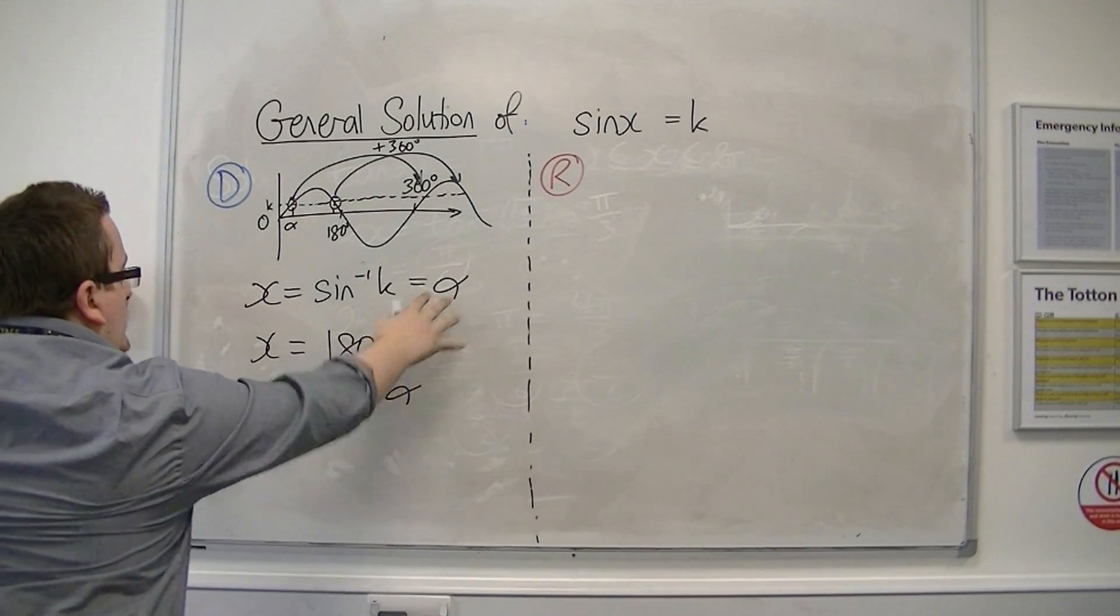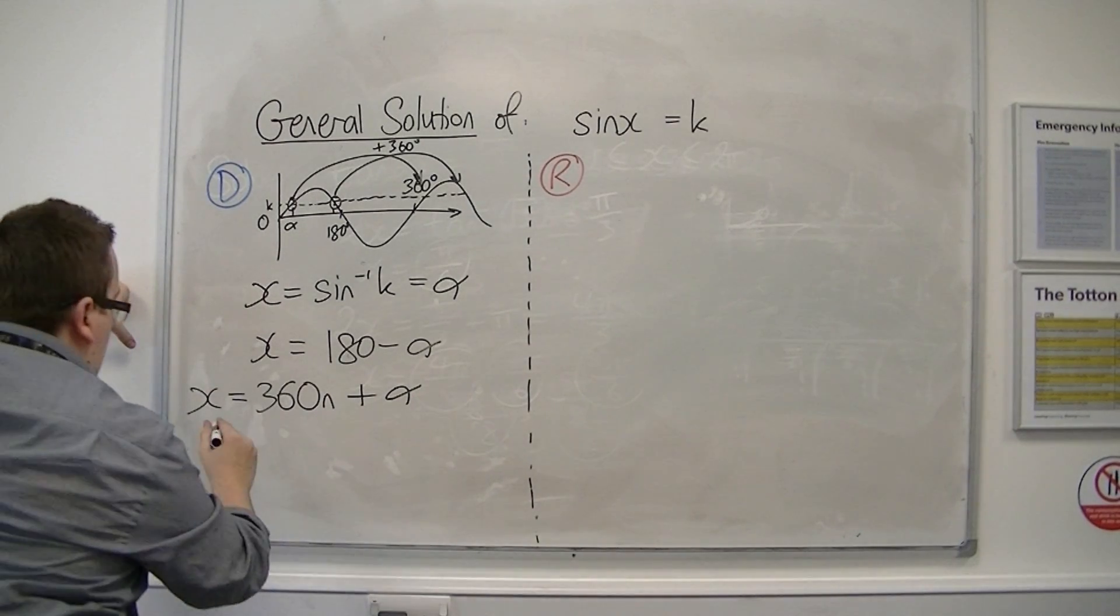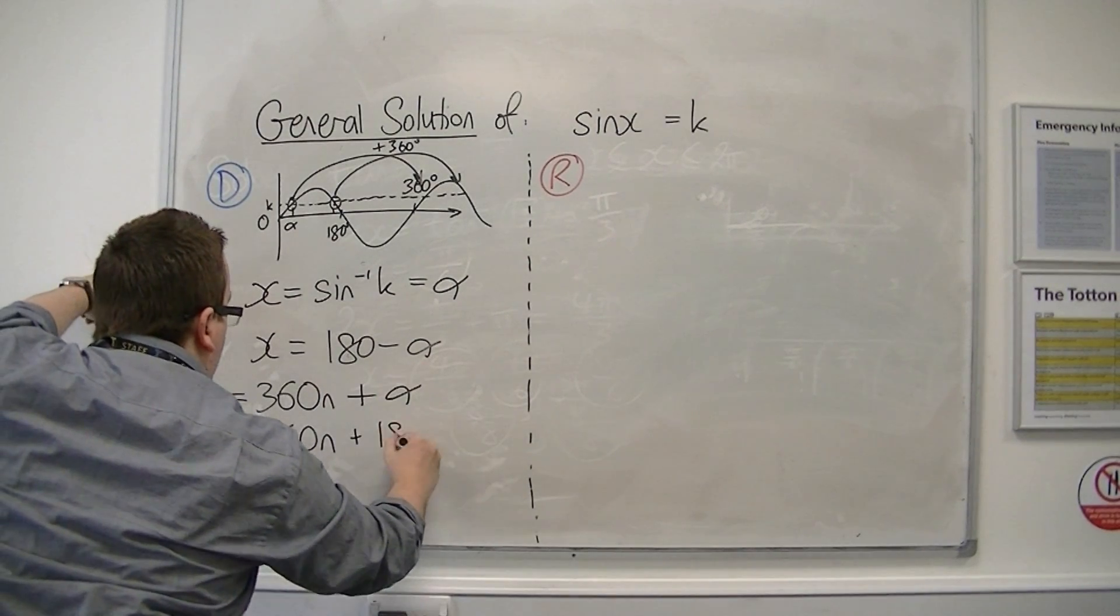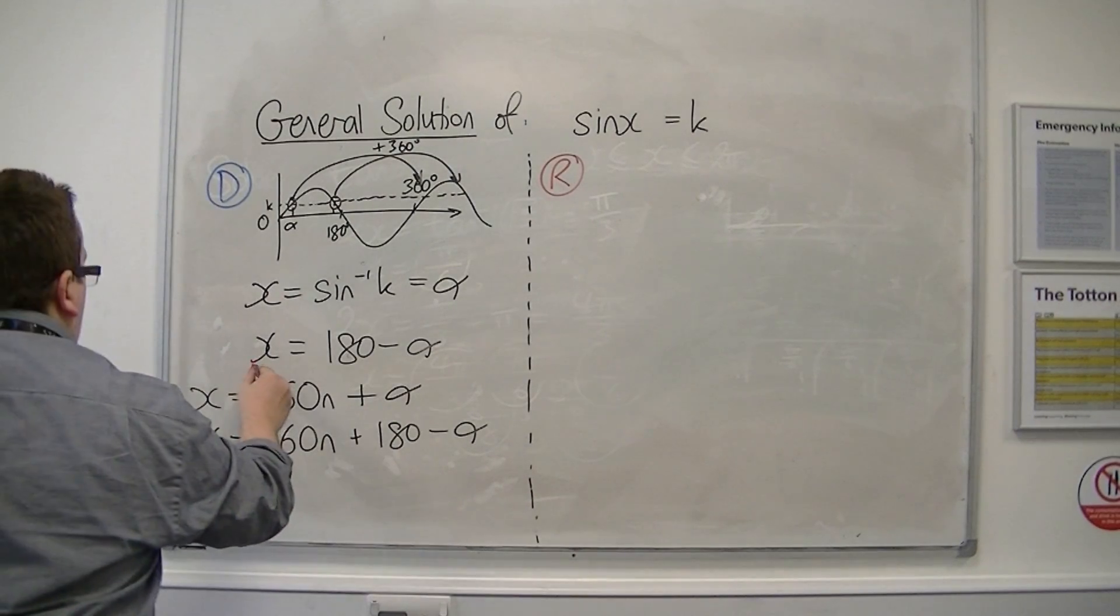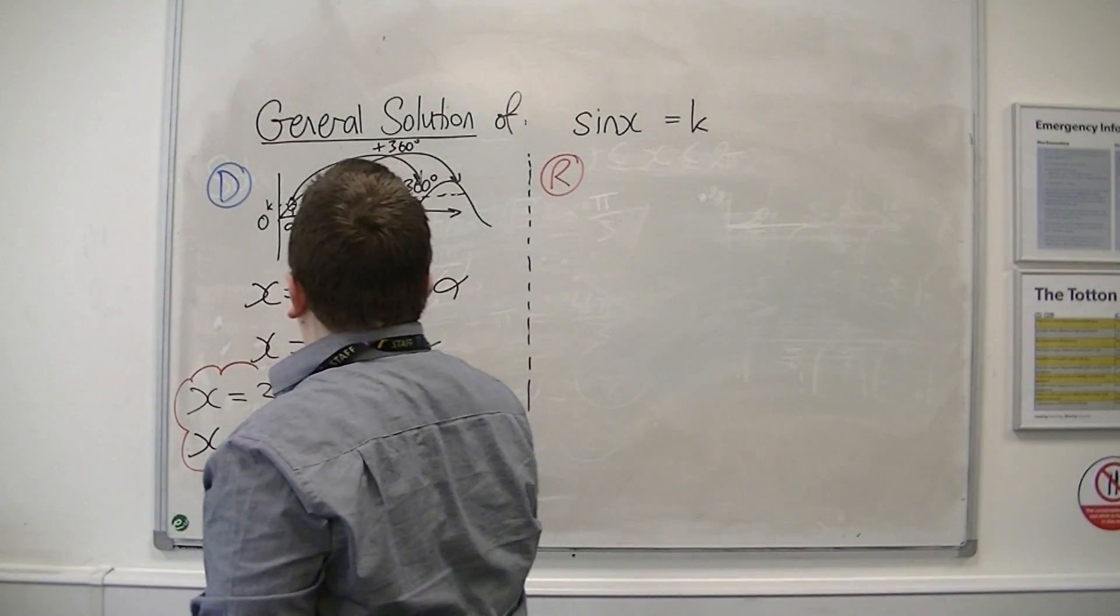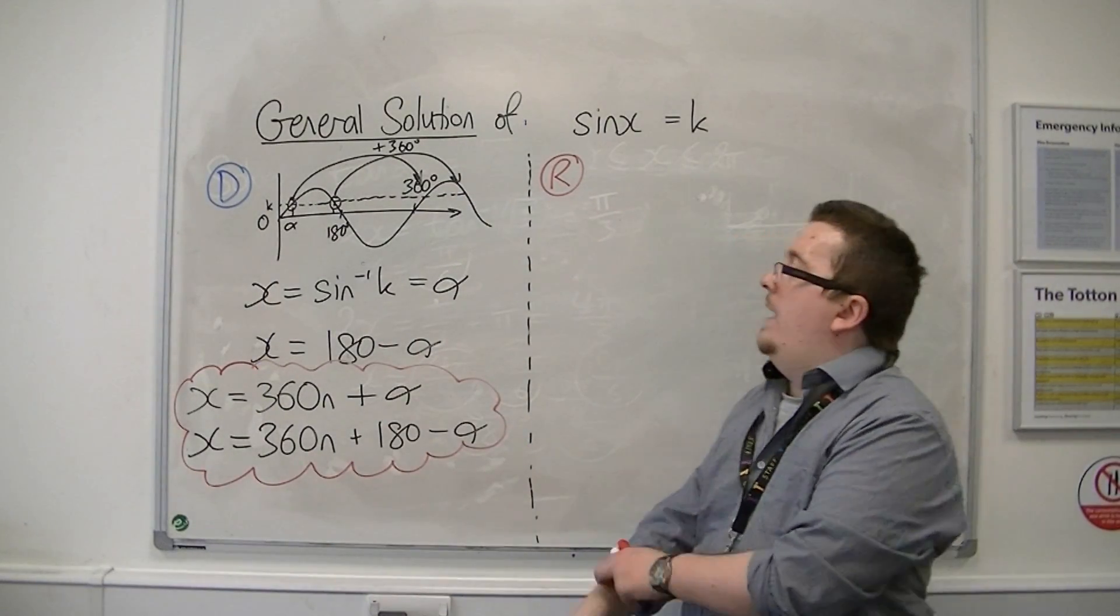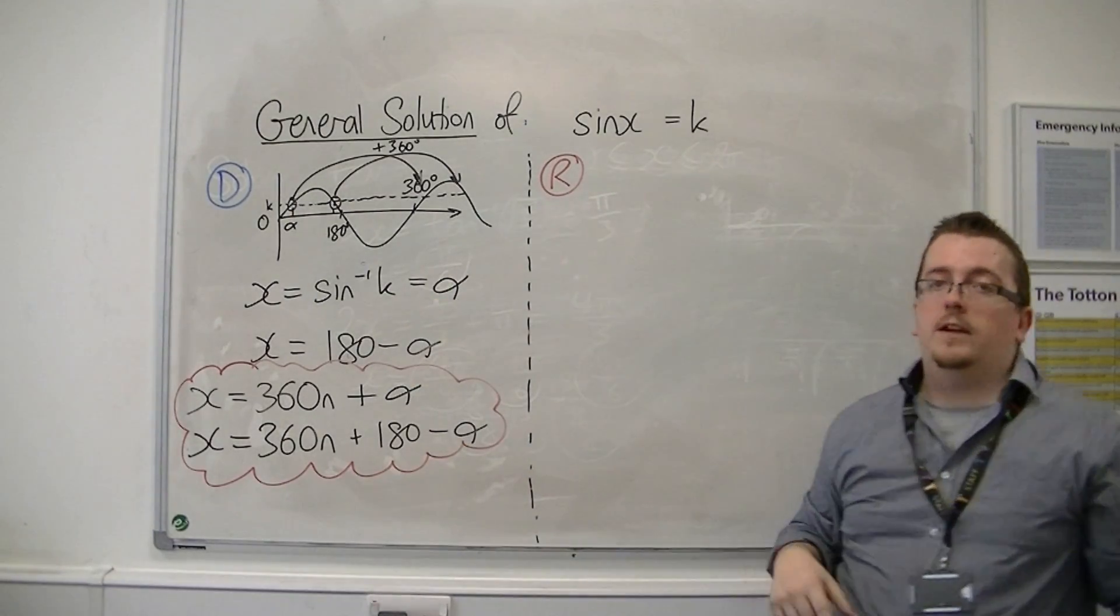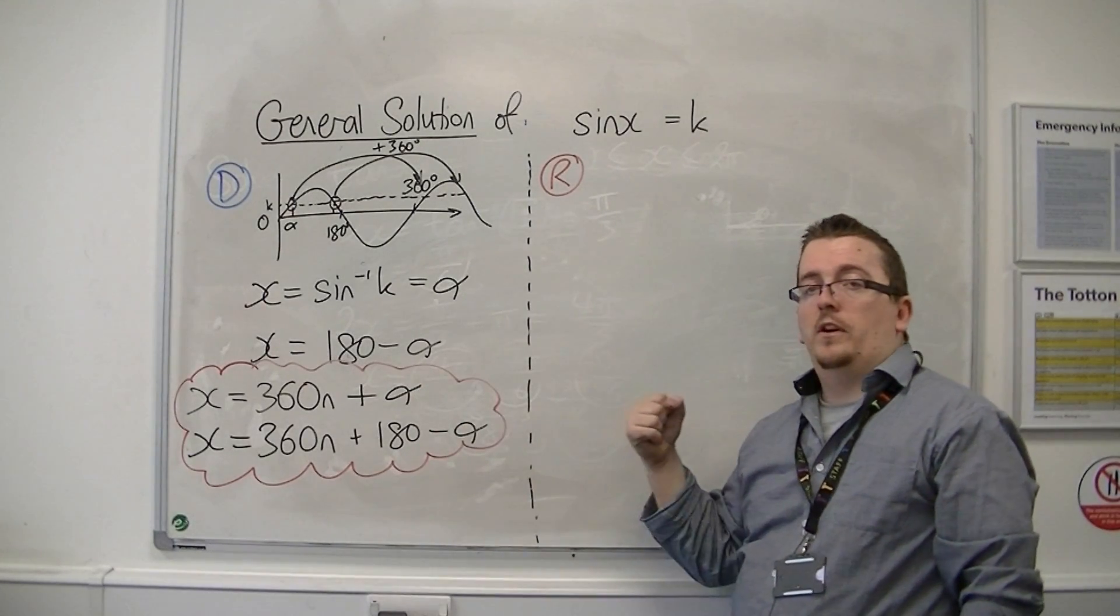So I'm adding multiples of 360 to alpha, and I'm adding multiples of 360 to 180 minus alpha. These are the equations that I need to be able to work with and know. This is the most generalized form, where alpha is the solution of inverse sine of k. This will allow me to generate all the solutions I want.